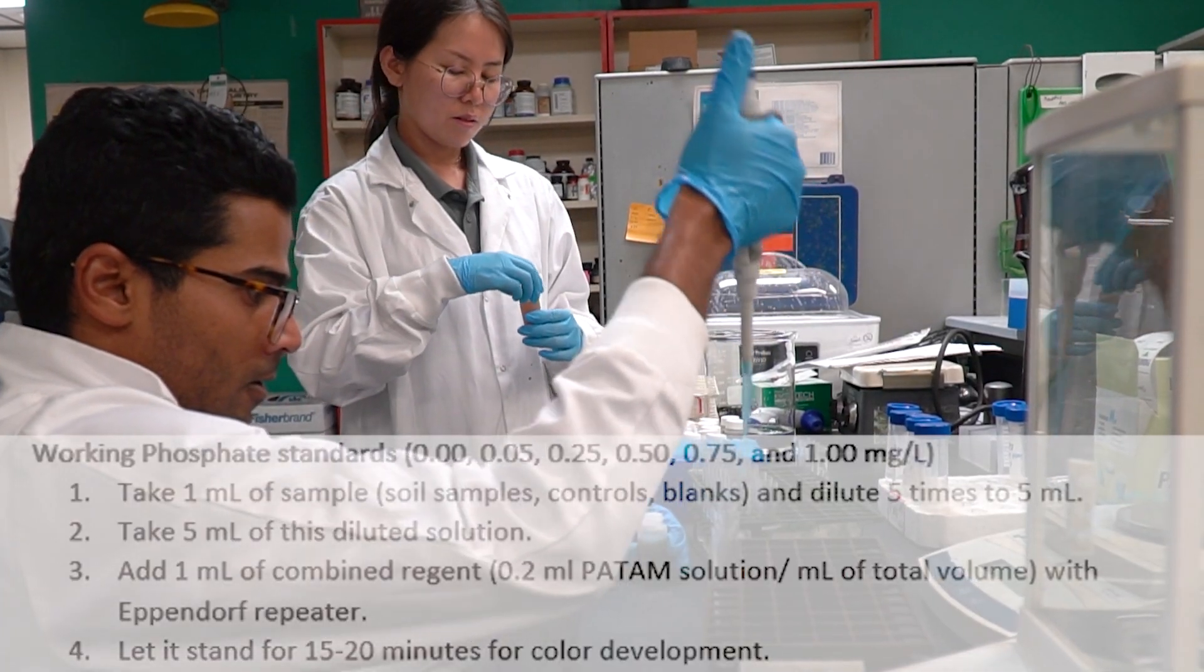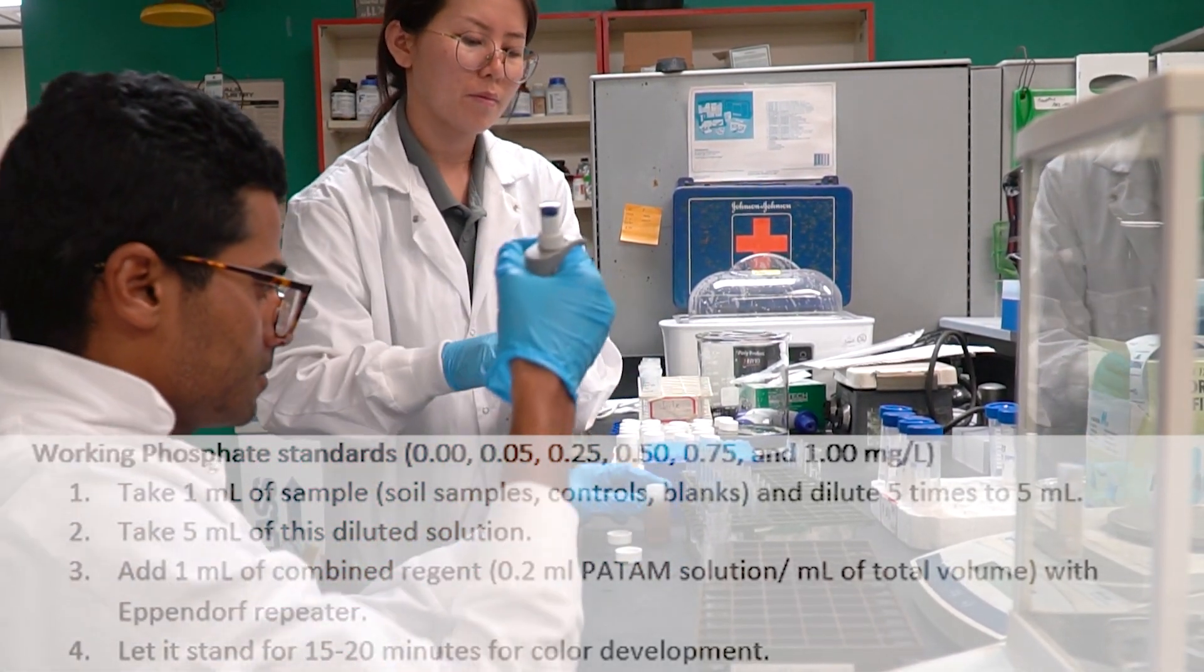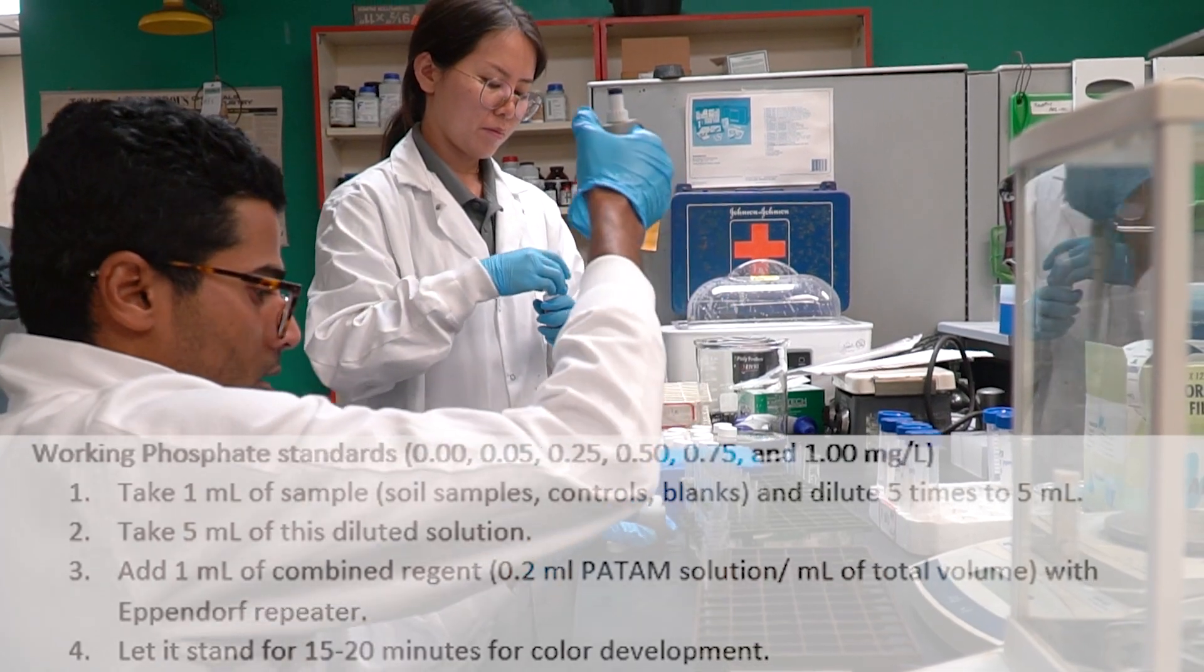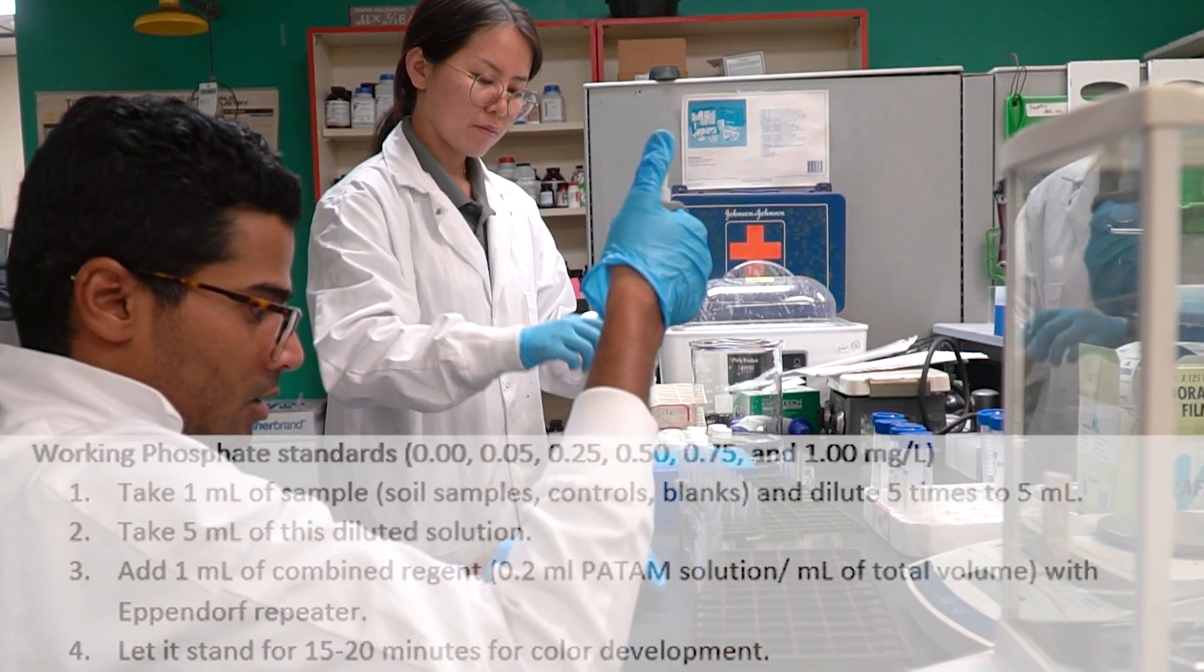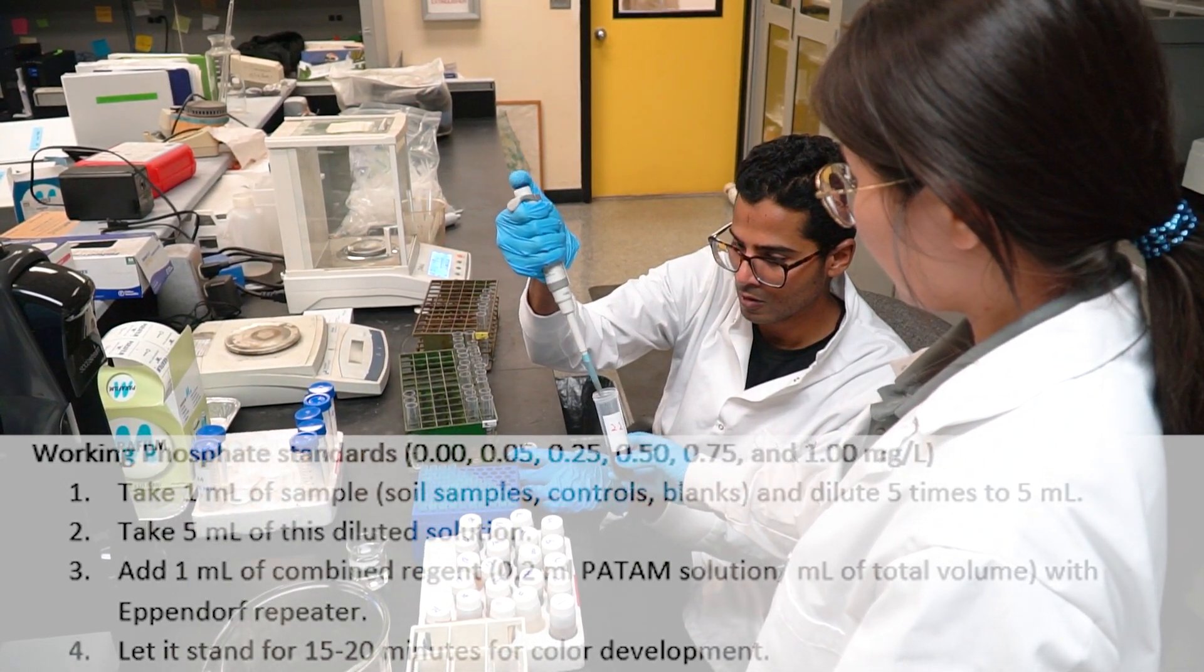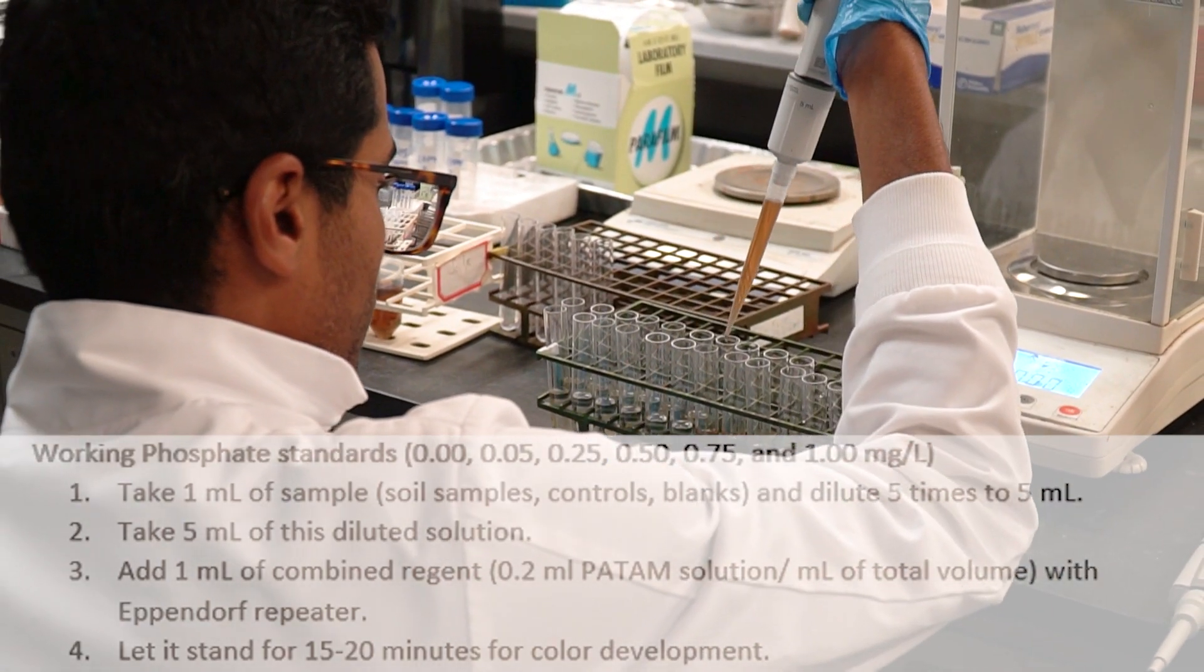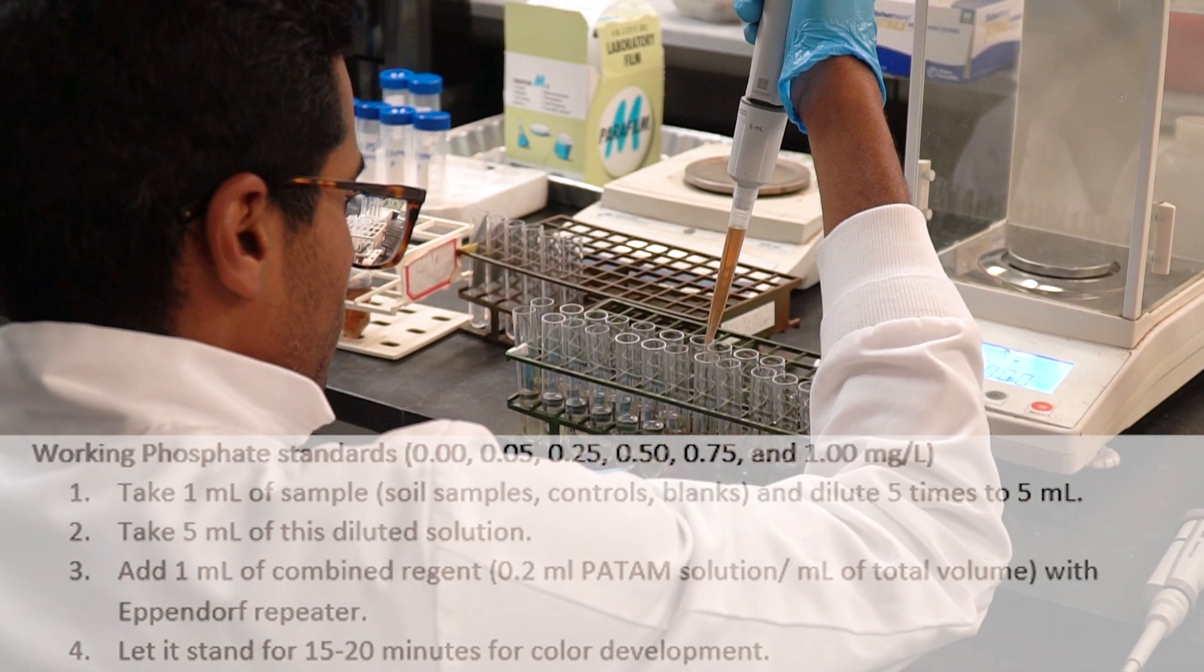For analyzing iron and aluminum phosphorus, we have to take 1 milliliter of the samples and standards and dilute that to 5 times. Then, we have to take 5 milliliter of these diluted samples. We have to add 1 milliliter of combined reagent to each sample.